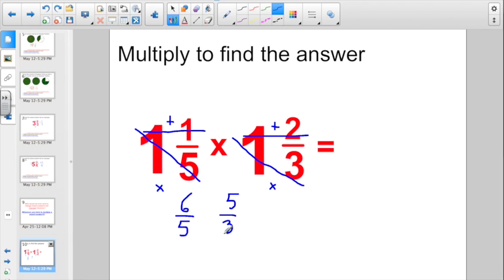So once you have both of these mixed numbers written as improper fractions, now I could go and multiply them out. 6 times 5. Numerator times numerator. That's going to give us 30. Denominator times denominator. 5 times 3. That's going to give us 15. And now change your final improper fraction. 30 fifteenths is actually equal to 2. So 1 and a fifth times 1 and 2 thirds really does equal 2.